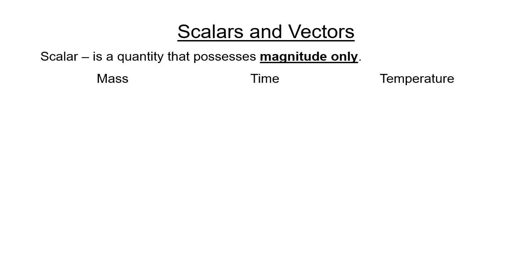Let us start first with scalars and vectors. By definition, a scalar is defined as a quantity that possesses magnitude only. Examples of a scalar quantity are the following: mass, time, temperature, speed, density, and energy.